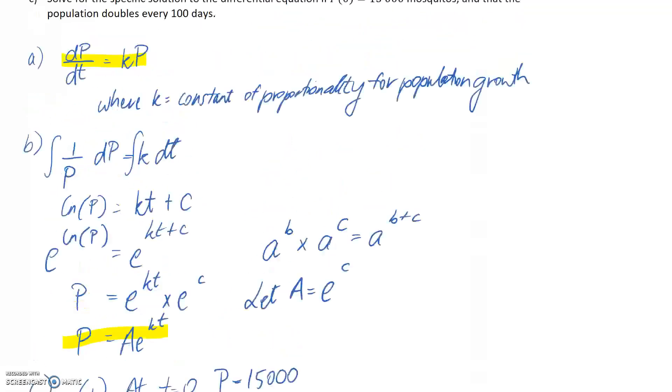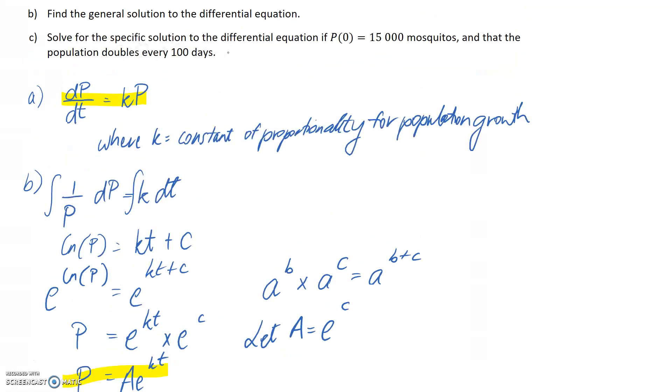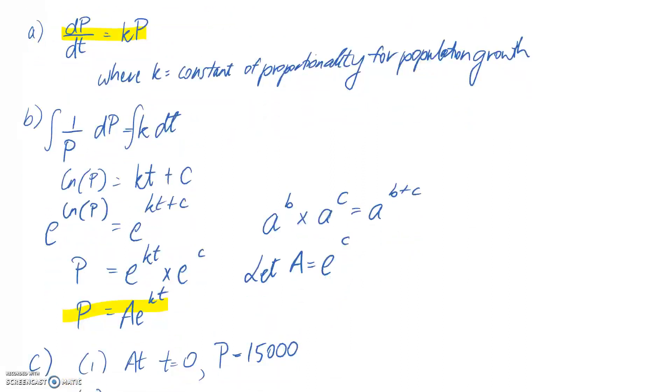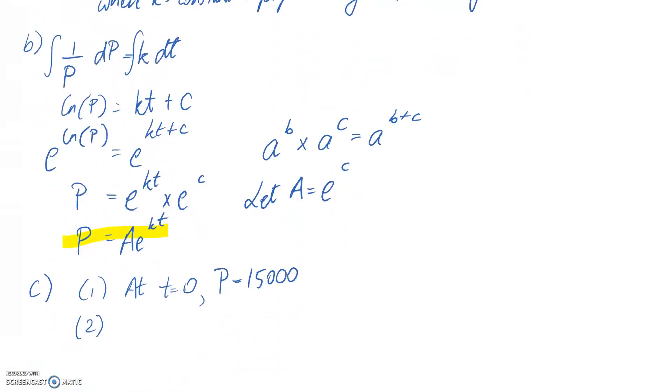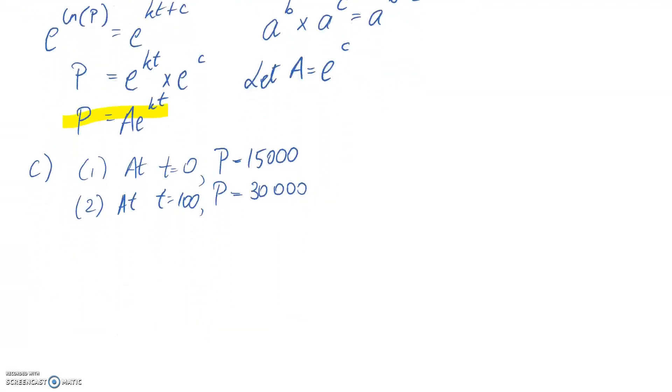The second condition: the population doubles every 100 days. At t = 0, we have 15,000, so 100 days later we'd have 30,000. These two conditions substitute into the equation to find a and k. Two equations, two unknowns—we can solve simultaneously.